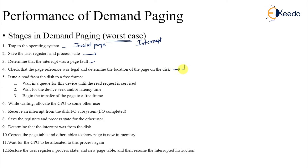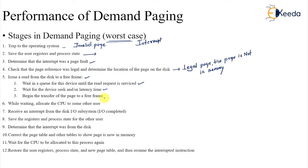Check that the page reference was legal and determine the location of the page on the disk. We first find that it is a legal page. The page is a legal page but it is not in memory — that is the actual cause. Now issue a read from the disk to a free frame, and wait for the device queue until the read request is serviced. Wait for the device seek and latency time, then begin the transfer of the page to a free frame.